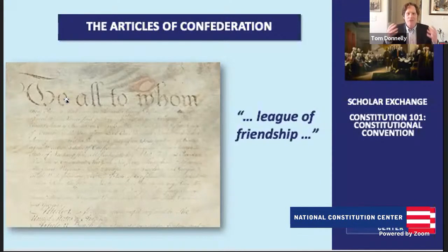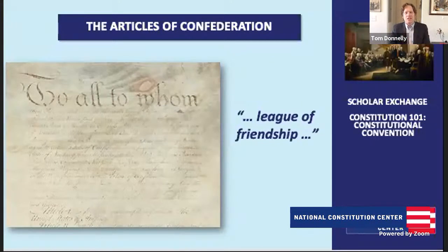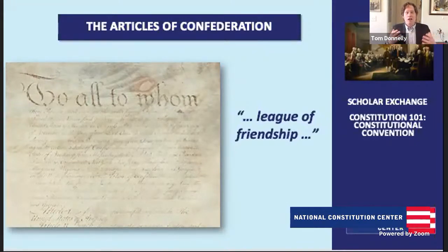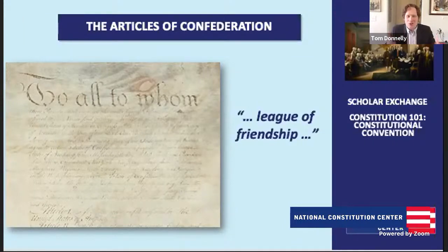The Articles of Confederation left a lot of power and independence to the states, and the national government itself had few powers. The Articles didn't have the power of taxation, didn't have the power to regulate interstate commerce, didn't have the power to raise an army. The Confederation Congress had to ask the states to voluntarily contribute money. You can imagine how eager many states were to contribute. So you can see already there are structural factors — this weak national government ran into problems.